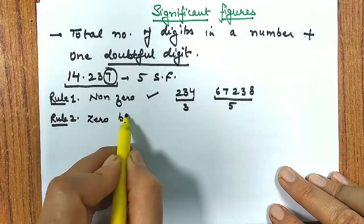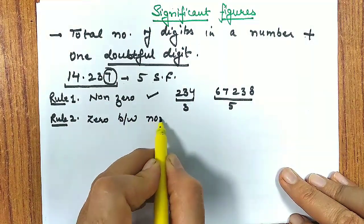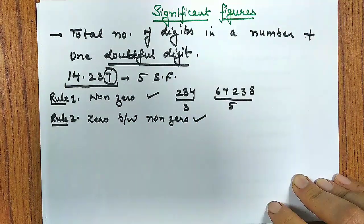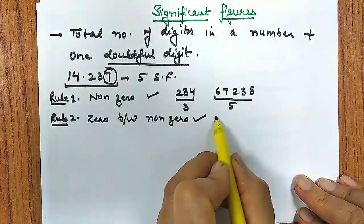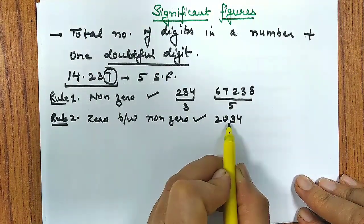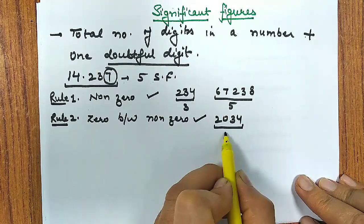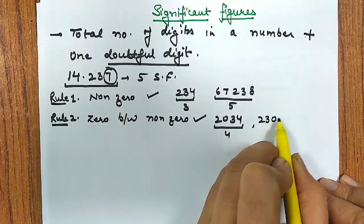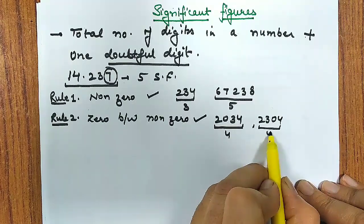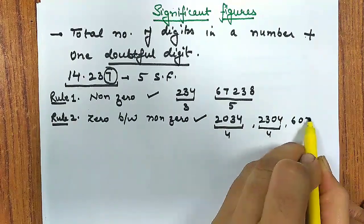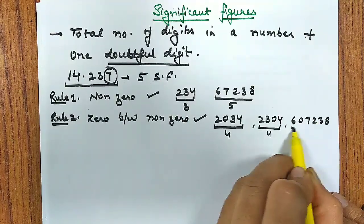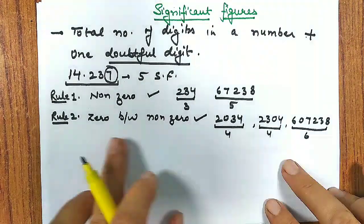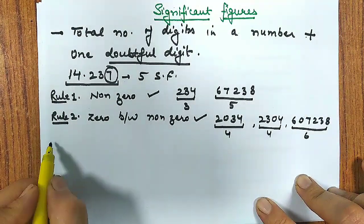If I say 234, how many significant figures does it have? It has 3 significant figures - 1, 2, 3. If I write 67238, how many significant figures? 1, 2, 3, 4, 5 - five significant figures. So there is no problem in counting the non-zero digits in any value. That means all the problems and rules are for zero.